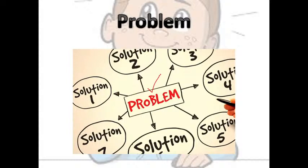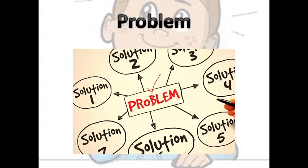In this diagram, at the center there is a problem. Around this problem there are different solutions: solution one, solution two, solution three, solution four, five, six, seven. One problem can have more than one path and more than one solution. This picture is very beneficial for those who say their research results are not coming — if your results are not coming, the solution you are working on may not be the right one. Try another method.